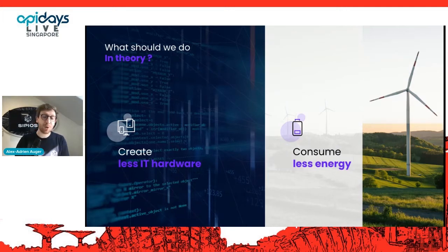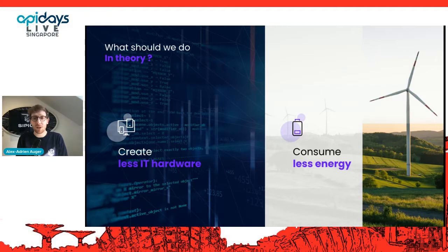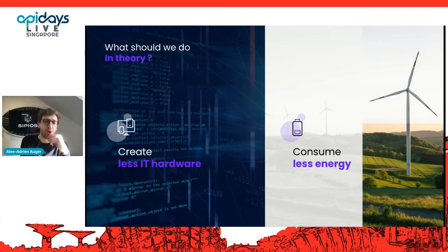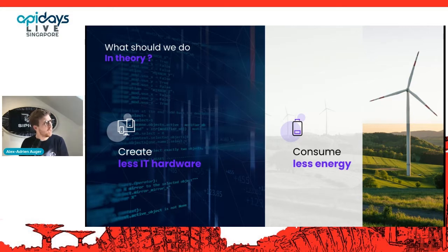So what should we do? Well, if we think of ways to improve on our side when creating tech products, we should focus on two things. We should first try to minimize the amount of new hardware that is needed, and on the other side, we should make those devices consume less energy.